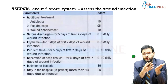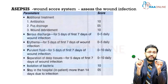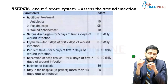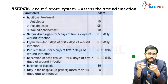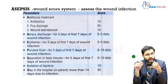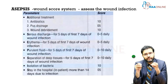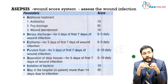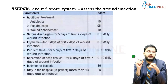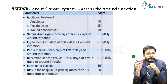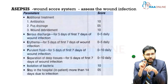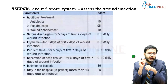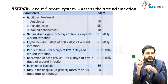Other than the Southampton system, we have the ASEPSIS wound score, an objective scoring system to assess wound infection. A stands for additional treatment such as antibiotics, incision and drainage, or wound debridement. S stands for serious discharge in the first five of seven days. E stands for erythema. P stands for purulent fluid. S stands for separation of deep tissues. I stands for isolation of bacteria from the wound. The final S stands for a hospital stay of more than 14 days due to infection.